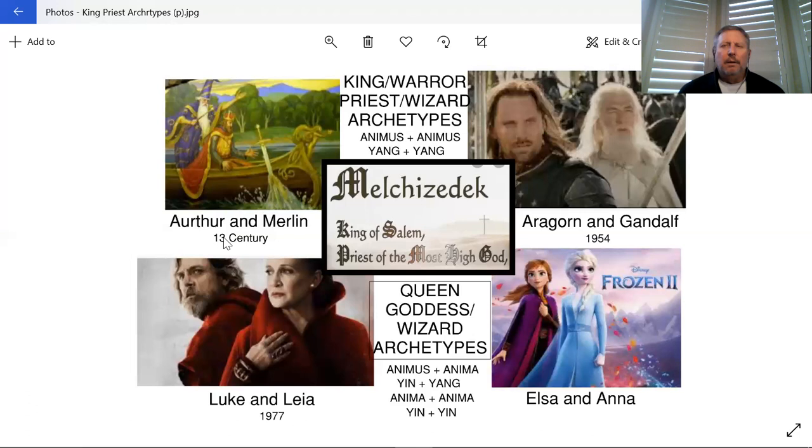In the movie Excalibur, it talks about how those ways are fading and the new god of the Christians are coming in. Within that, we can see there are two men. We have what we call within Jungian terms animus, which is the male side, so animus plus animus. Within the Chinese or Taoist, we would have yang and yang, two male characters.